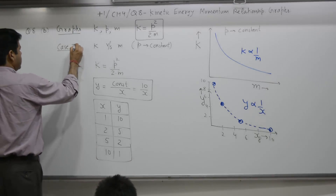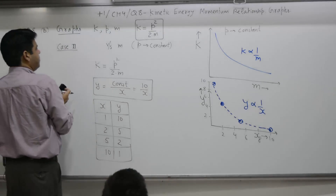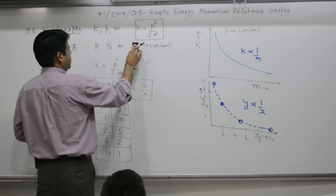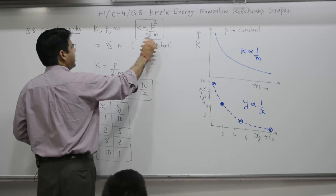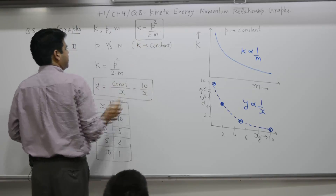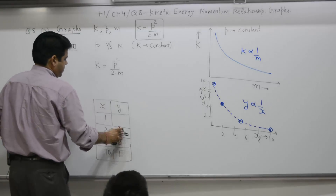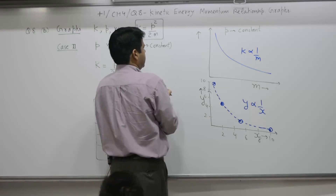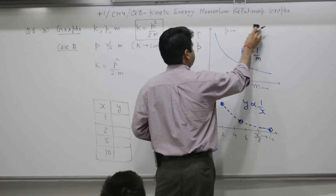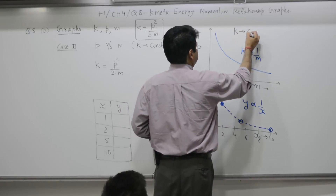Case number 2: the graph of the second type. It is a P–m graph, P as a function of m. The third parameter now is K. You have to plot a graph between P and m keeping K constant. The procedure is the same.